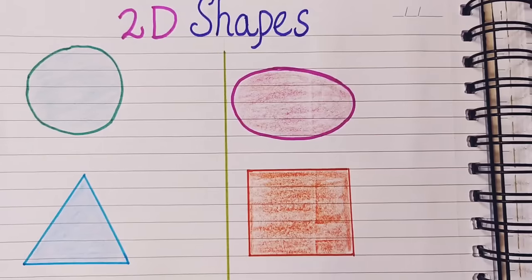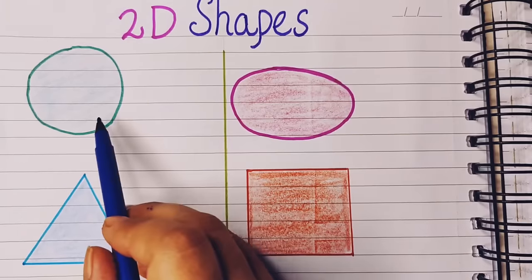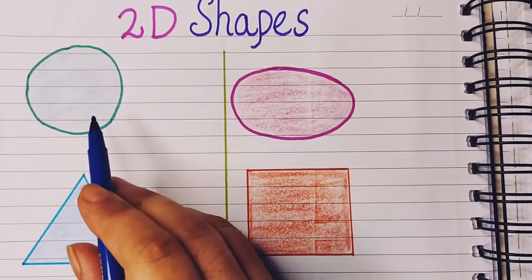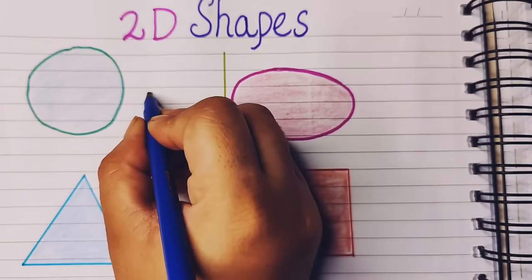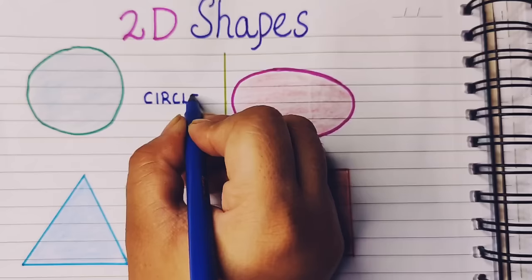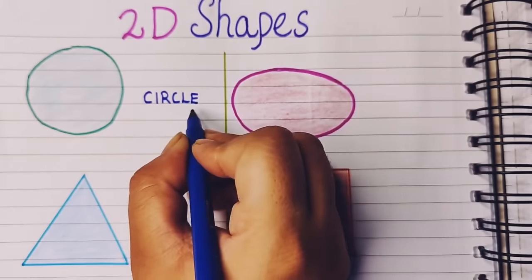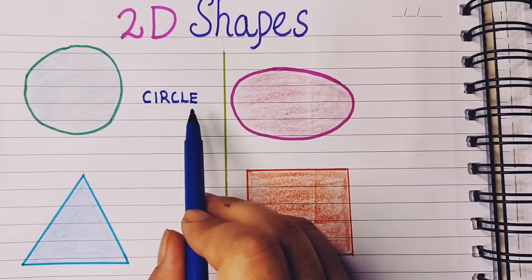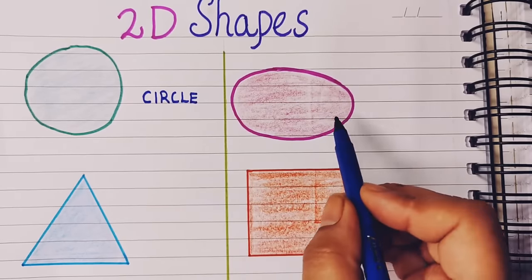The first shape is round and it is known as circle. Circle: C-I-R-C-L-E, circle.